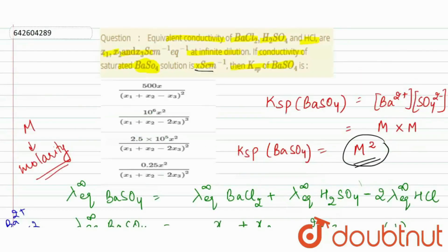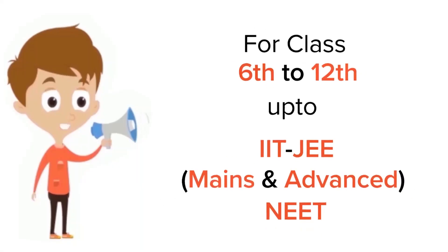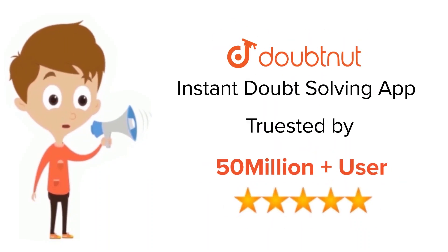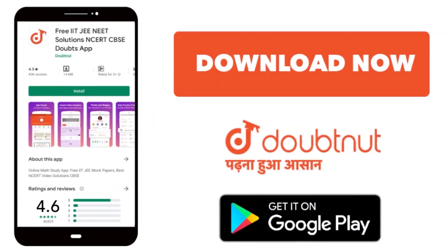Checking with the options, it matches our third option, so that is the correct answer. For class 6 to 12, IIT JEE, and NEET level — trusted by more than five crore students — download the Doubtnet app.